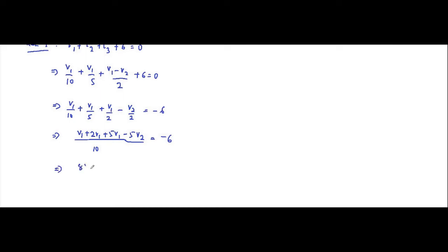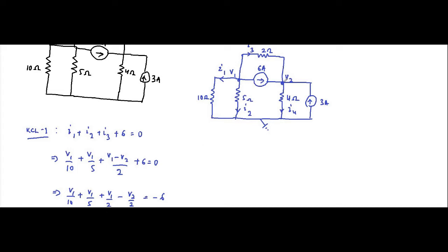Simplifying, the first equation becomes: 8v1 minus 5v2 equals minus 60. This is the first equation. We have two variables v1 and v2 to solve. Now we apply KCL at node two. At node two, i4 is flowing away from the node, while 6 ampere, i3, and 3 ampere are all flowing towards the node.